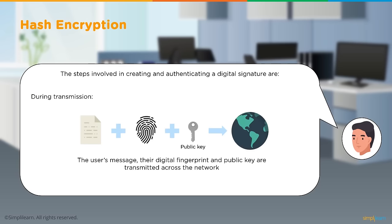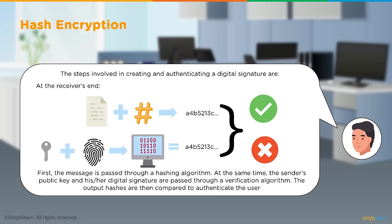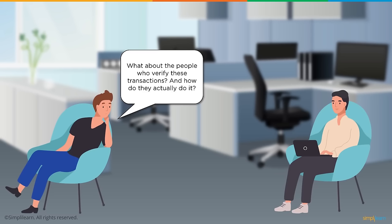During transmission, the user's message, digital fingerprint, and public key are published on the network for miners to verify the sender's authenticity. At the receiver's end, the message is passed through a hashing algorithm. Simultaneously, the sender's public key and digital signature are passed through a verification algorithm. If both resulting hashes match, the transaction and sender's identity are approved; otherwise rejected. This is the process of authenticating sender identity by comparing hash values.